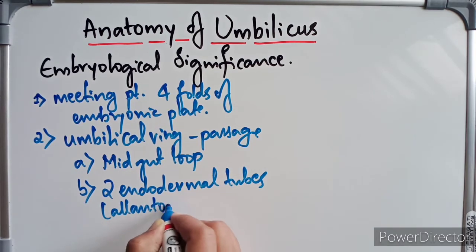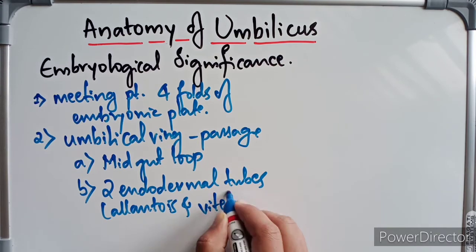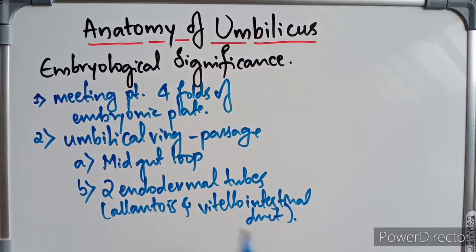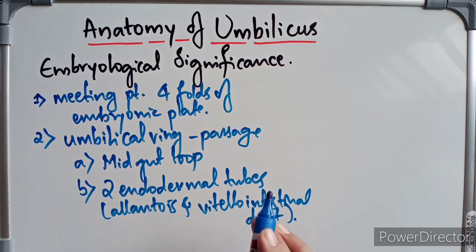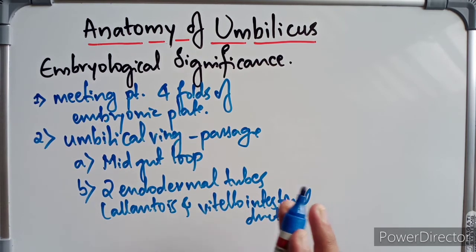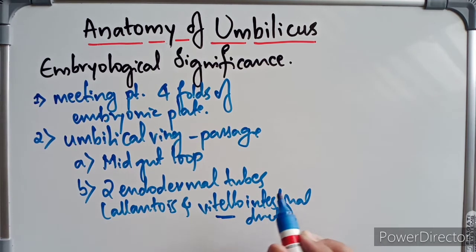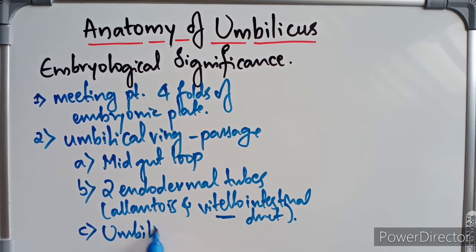The two endodermal tubes are the allantois and the vitello-intestinal duct. These project into the umbilical cord. The allantois is a diverticulum of the endodermal cloaca; its proximal part gives rise to the urinary bladder and its distal part to the urachus. The vitello-intestinal duct is a diverticulum of the midgut extending from the distal ileum to the umbilicus; if its proximal part persists, it may form Meckel's diverticulum.